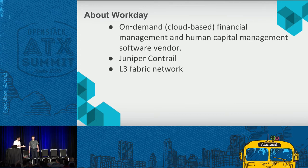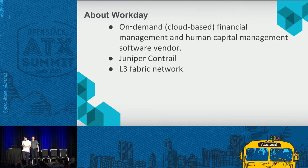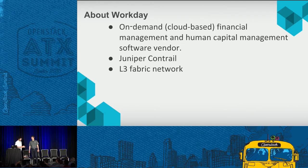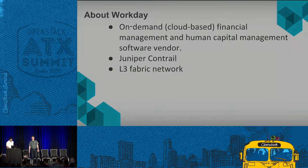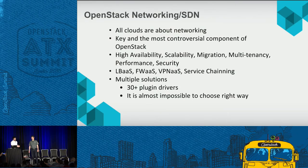Workday is a customer who uses the Juniper Contrail SDN — it's a public reference. What's interesting is that they use L3 fabric everywhere, so they don't use VLANs. They have an underlay network based on L3 fabric, and then they put Juniper Contrail on top.